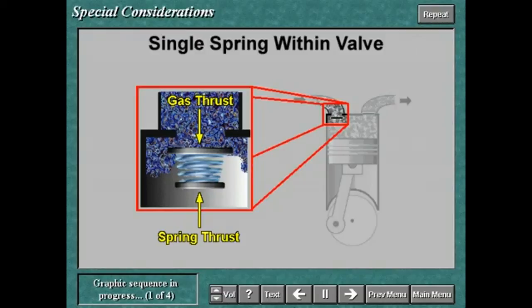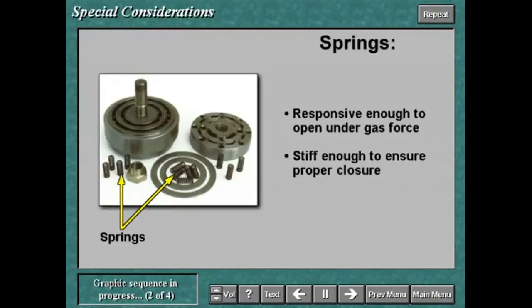If spring stiffness and ring lift or gas velocity are not correctly related to each other, the rings are not stable and will flutter. Springs must be selected so that they are responsive enough to allow the rings to open under the gas force and to avoid vibration. They must also be selected so that they are stiff enough to avoid closure after the dead end of the stroke.